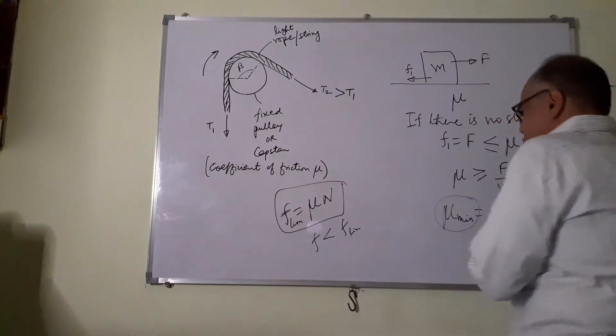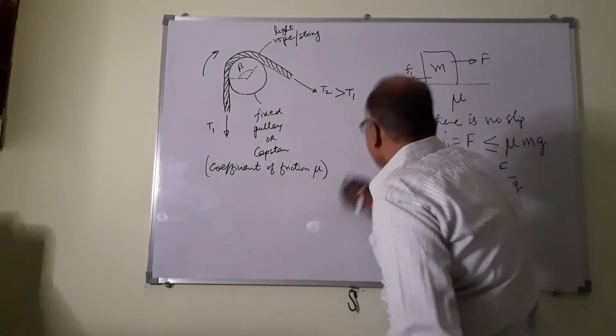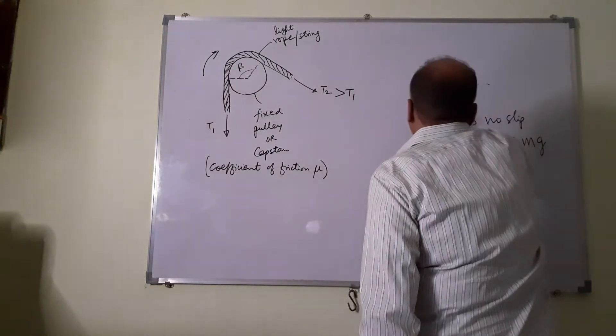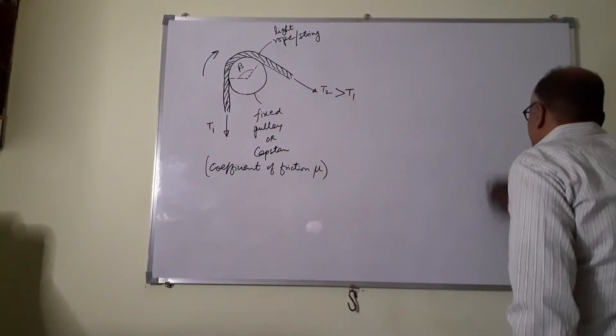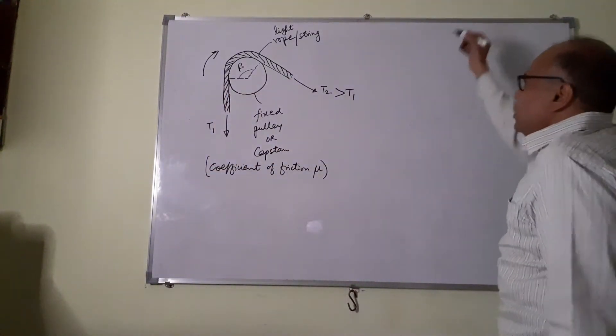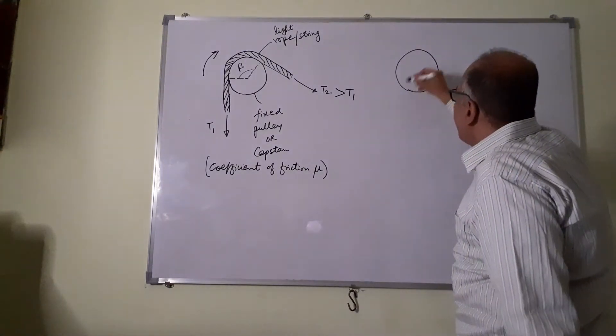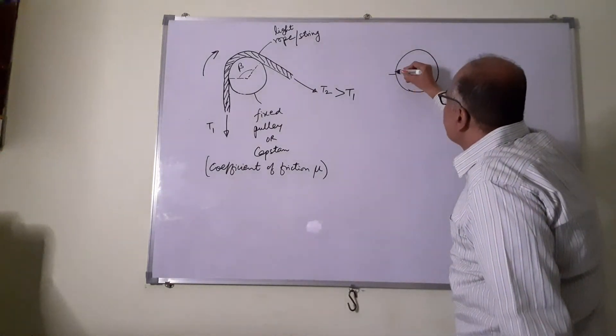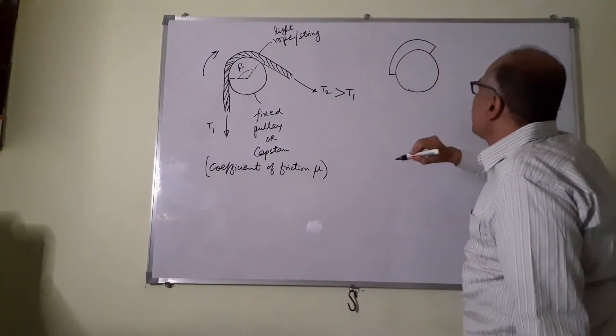Now let's go about the derivation, the relation between T1 and T2. Let me draw the pulley here. And this is the rope I am showing.